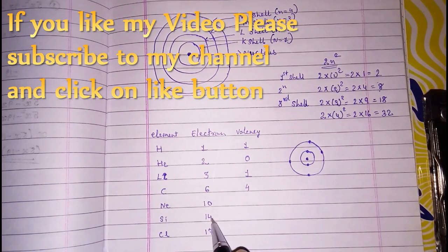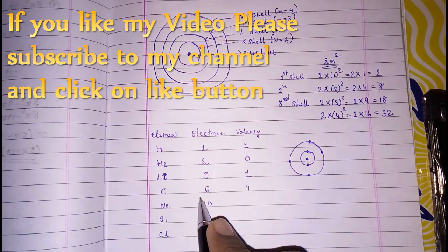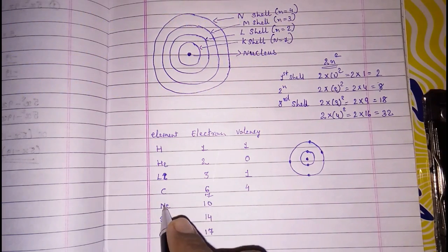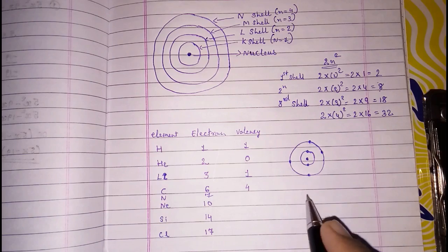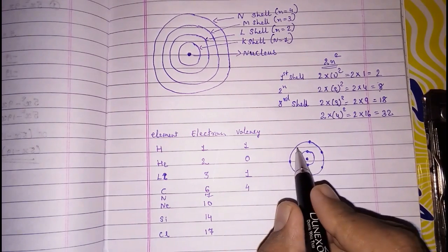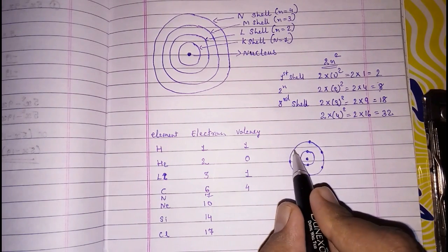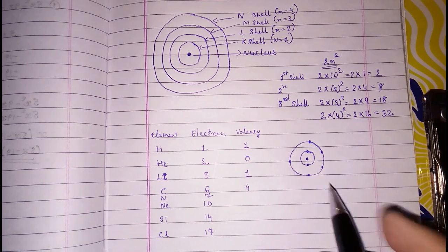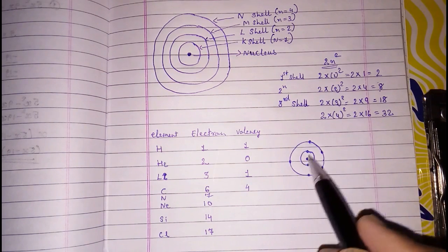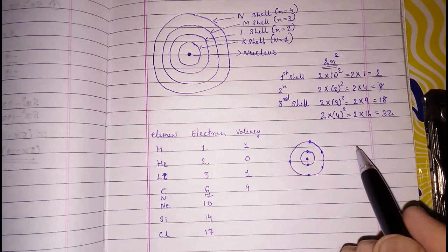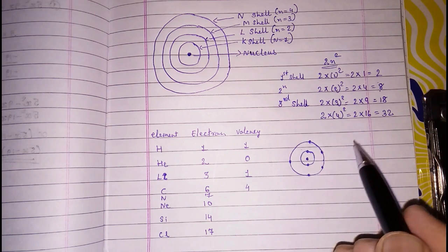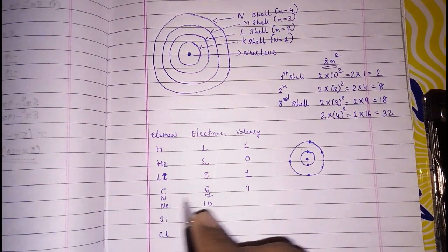Now let's take nitrogen with atomic number 7. In the first orbit there are two electrons, and in the next orbit there are five. Either nitrogen has to gain three electrons to complete eight, or give away five. When there are five electrons in the outer shell, it is easier to gain three electrons from another atom. So the valency of nitrogen is three.